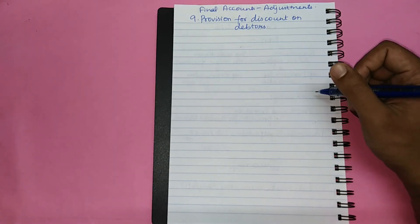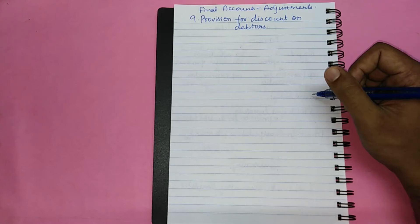Before learning how to account for provision for discount on debtors, let us first learn what is the meaning of the same. In our previous video, we learnt the meaning of provision in detail, where we saw that provision is an amount set aside to cover a probable future expense or a reduction in the value of an asset.